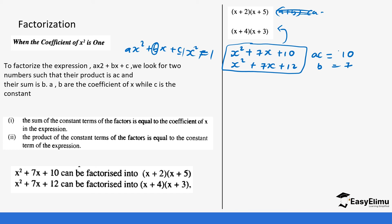We are going to look for two numbers such that if you multiply them you get 10 and if you add them you get 7. The product is ac = 1 × 10 = 10 and the sum is b = 7. Looking at factors of 10: 5 and 2 are those numbers — 5 × 2 = 10 and 5 + 2 = 7. So we rewrite the equation including this split: x² + 5x + 2x + 10.